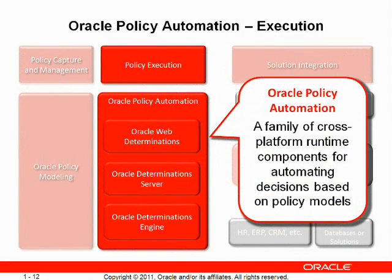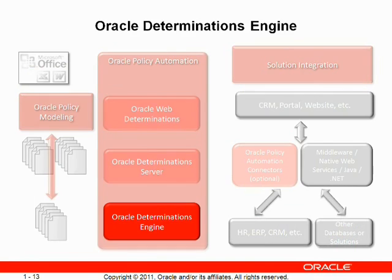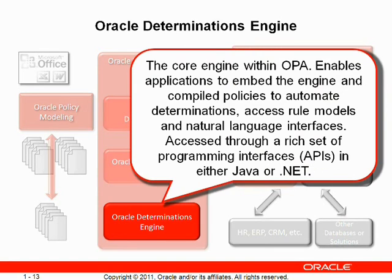The policy execution layer of Oracle Policy Automation offers three cross-platform deployment options ranging from application programming interfaces to web services to web applications. The first among the three alternatives is Oracle Determinations Engine, the core execution engine within Oracle Policy Automation. Applications can embed the engine and compile policies to automate determinations, access rule models, and natural language interfaces.